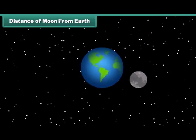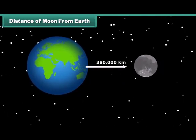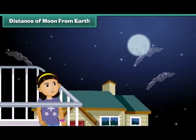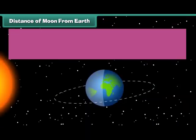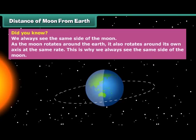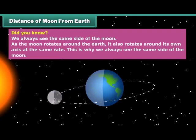The moon is an average of about 380,000 km from Earth, which is pretty close. Because of its proximity, we don't need a telescope to see features on the moon's surface from Earth. Did you know we always see the same side of the moon? As the moon rotates around the Earth, it also rotates around its own axis at the same rate, which is why we always see the same side of the moon.